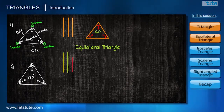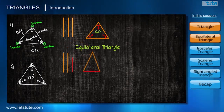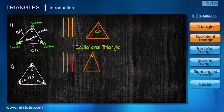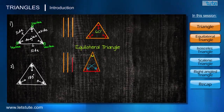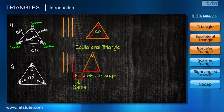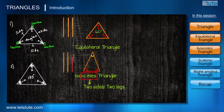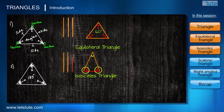Now, what if we have only two equal line segments and the third one is not equal to them? When we make a triangle from them, only two angles will be equal to each other — otherwise the triangle is not possible. Notice the relation: when we had three equal sides, we got three equal angles; with two equal sides, we get two equal angles. Those two equal angles are opposite to the equal sides. Such triangles are called isosceles triangles — 'iso' means same and 'sceles' means two sides or two legs.